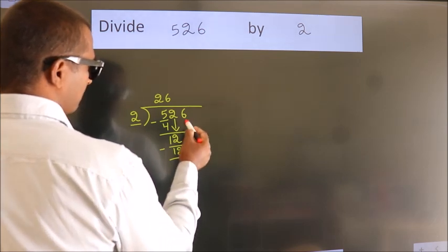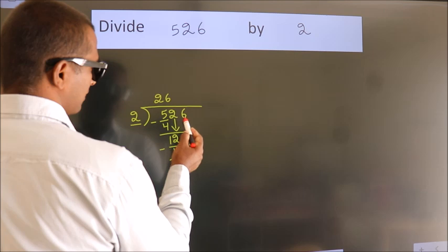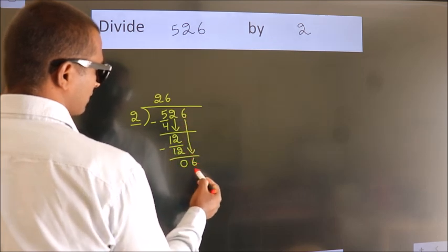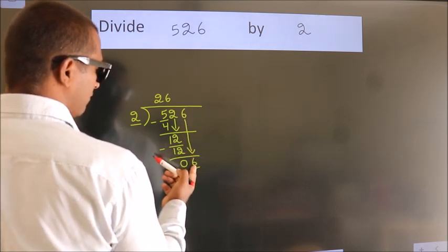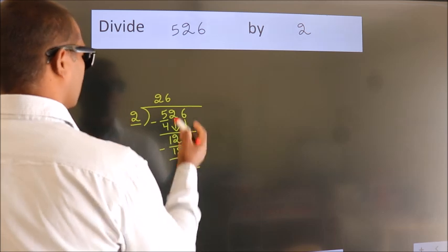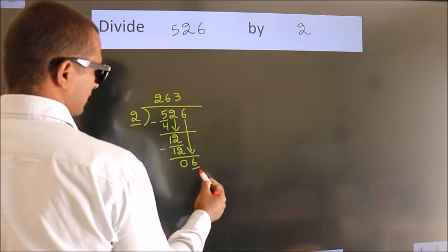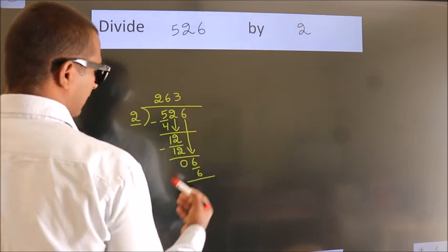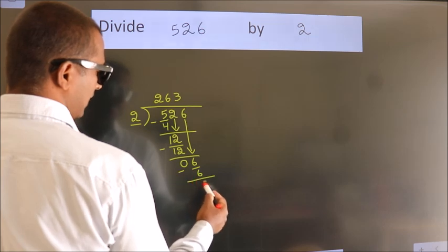After this, bring down the beside number. So 6 down, so 6. When do we get 6? In 2 table, 2 times 3 is 6. Now we subtract. We get 0.